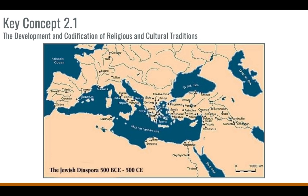The first thing I want to talk about is the development and codification of religious and cultural traditions. I want to start by thinking about existing religious traditions at the start of this time period. There are two major religious traditions that continue and further develop as they further codify traditions and beliefs, and those are Judaism and Hinduism.